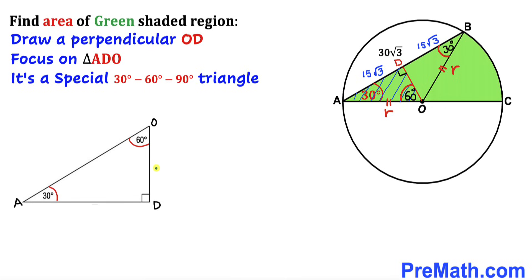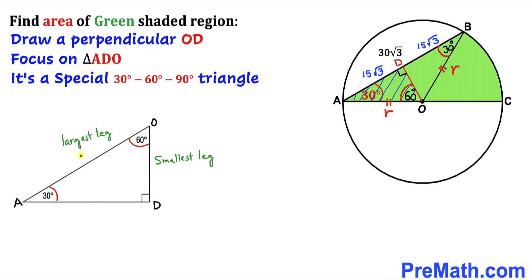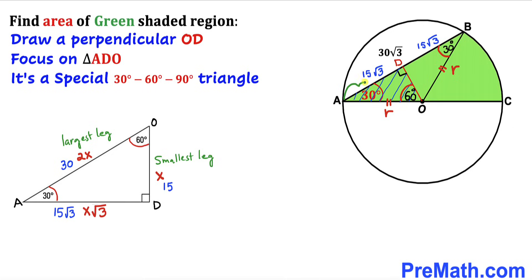In triangle ADO, the 30 degree angle is the smallest, so the side opposite it is the smallest leg. The 90 degree angle is the largest, so the side opposite it is the largest leg — which is twice the smallest leg. If the smallest leg is x, the largest leg is 2x and the third leg is x times square root of 3. In our case, AD equals 15 times square root of 3.